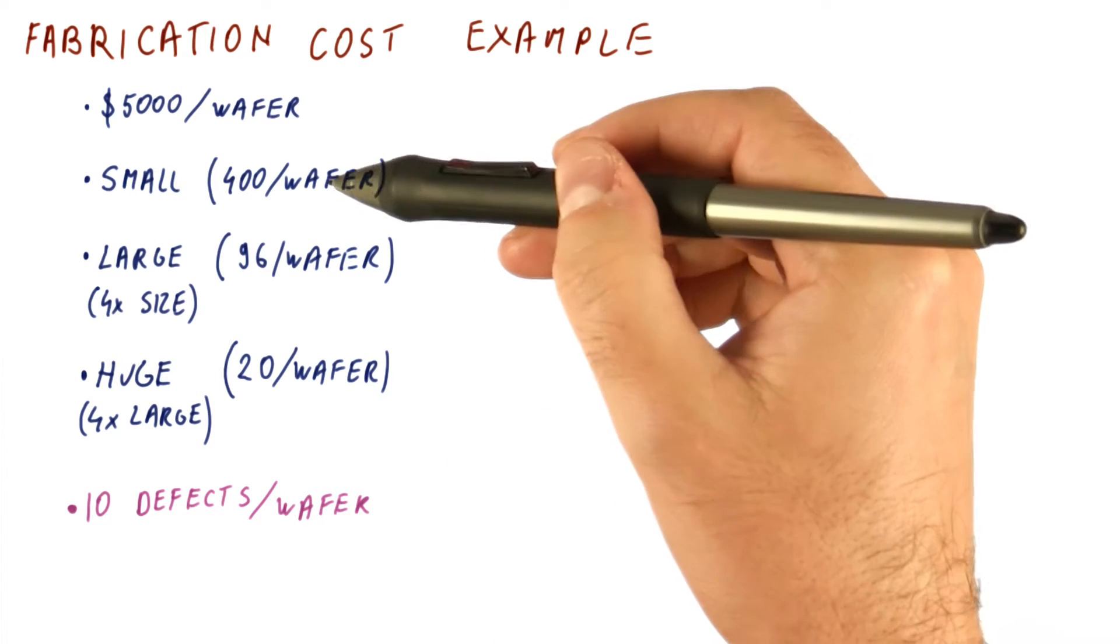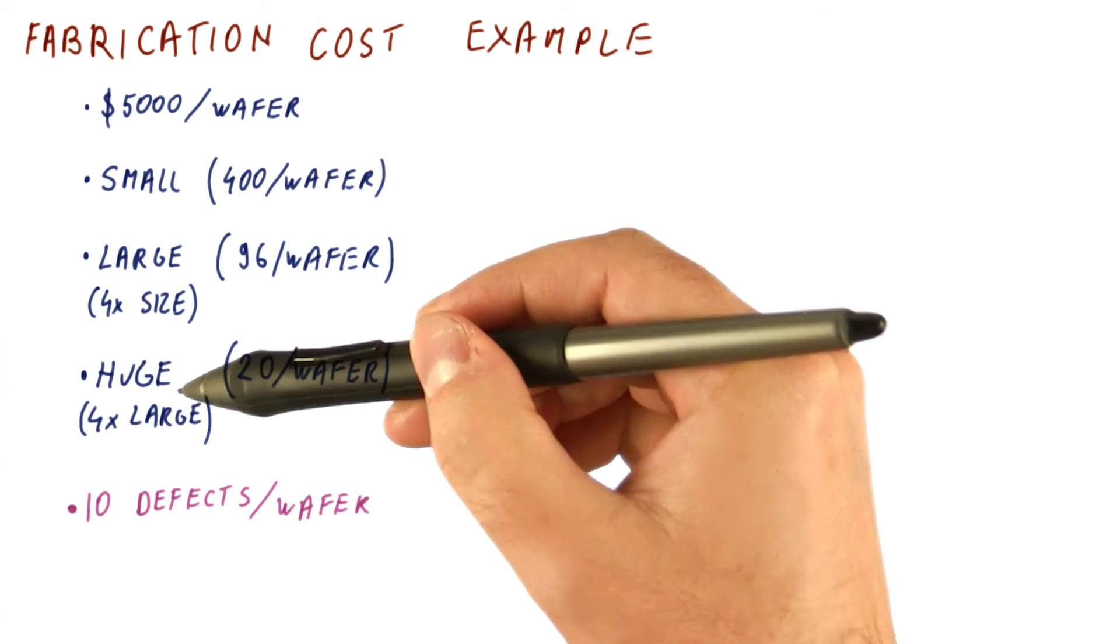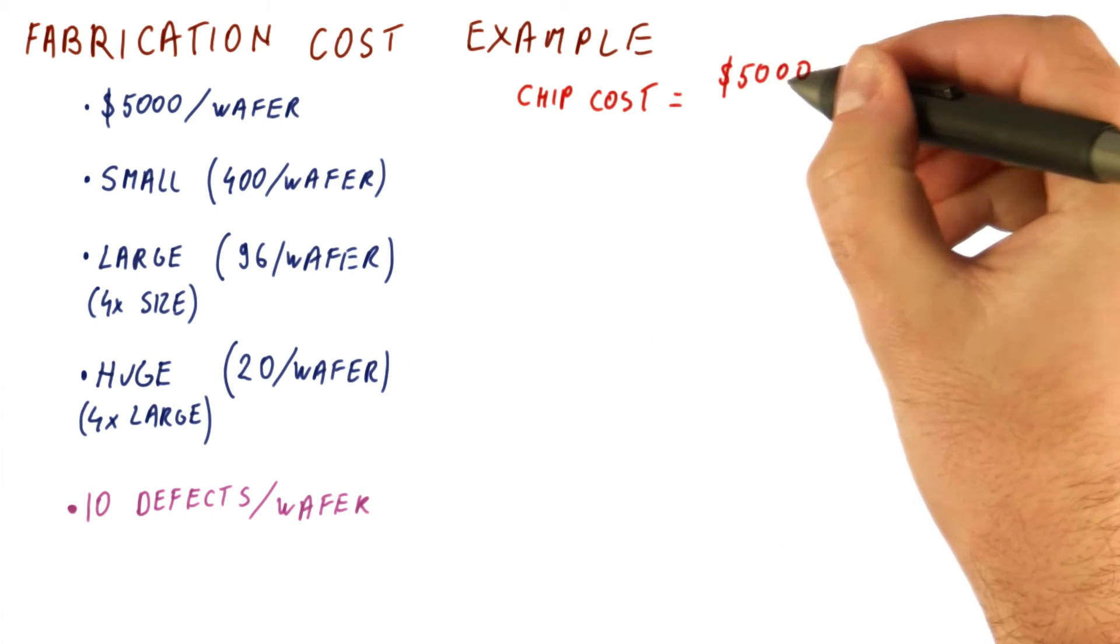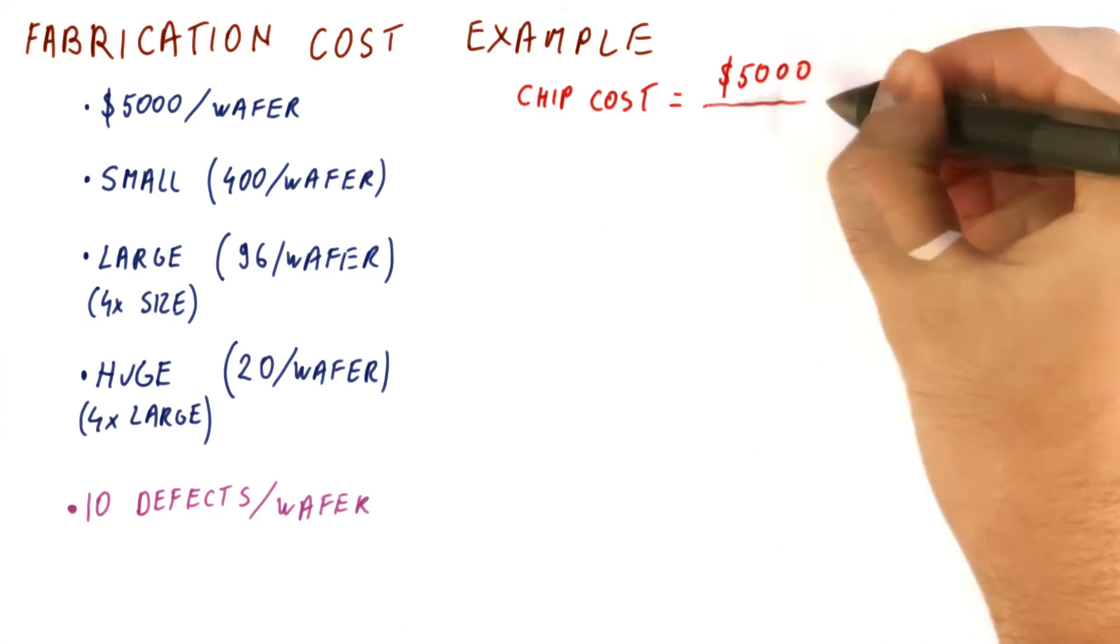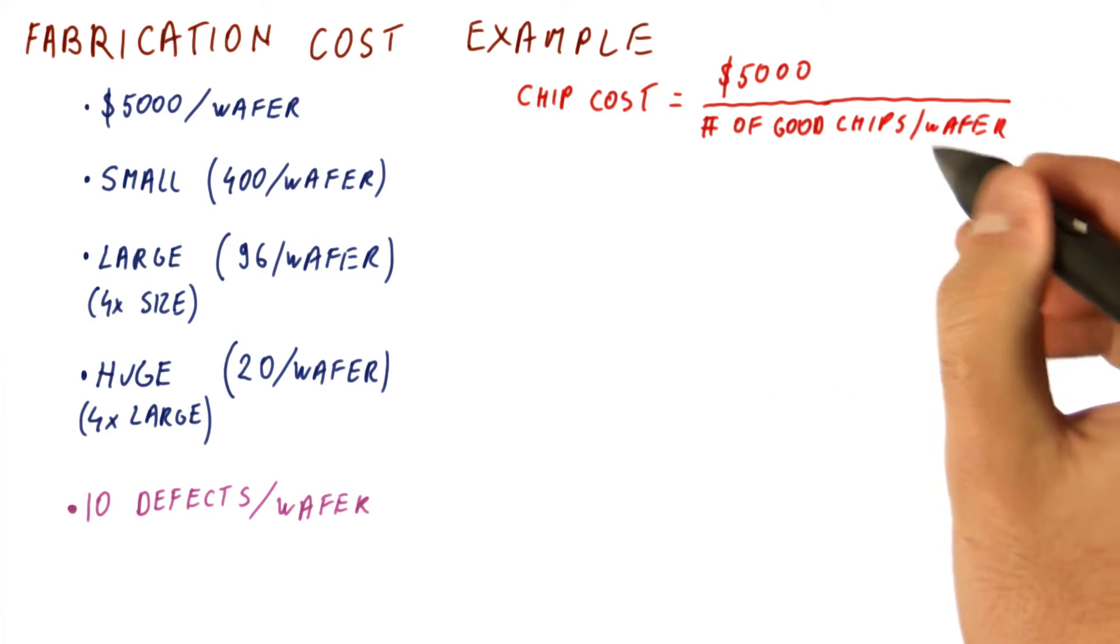What we want to compute is what's the manufacturing cost of a small, large, and huge chip. The chip cost will be the $5,000 for a wafer divided by how many good chips we get per wafer.